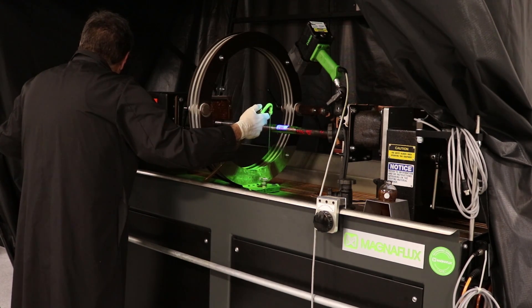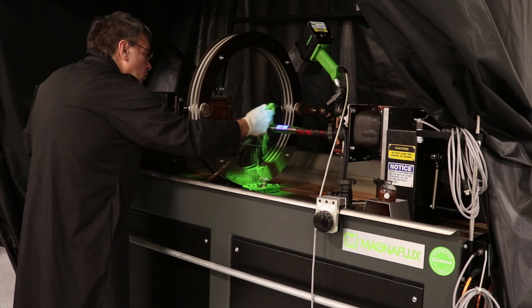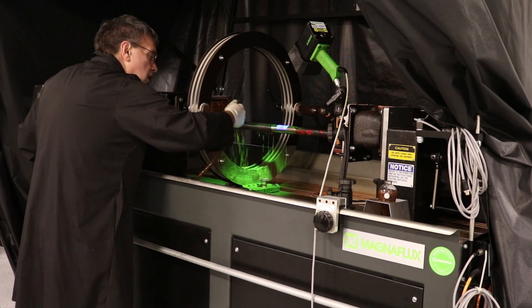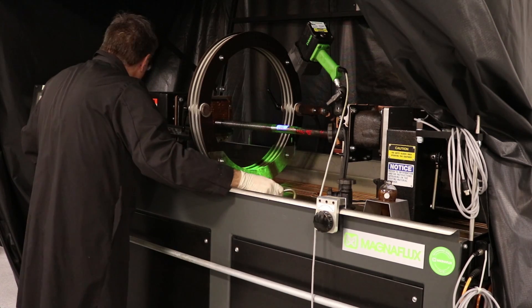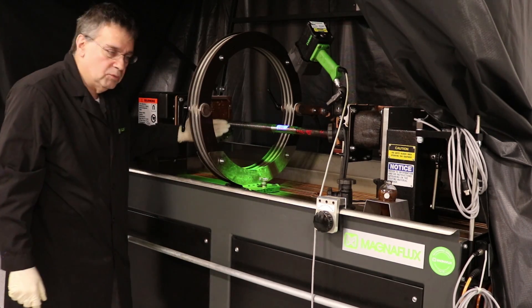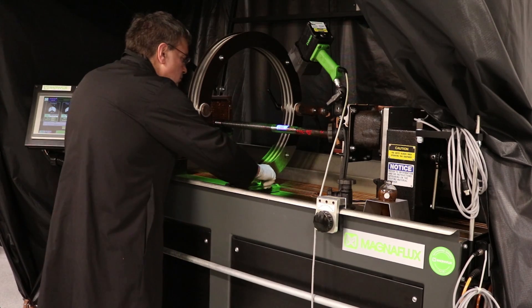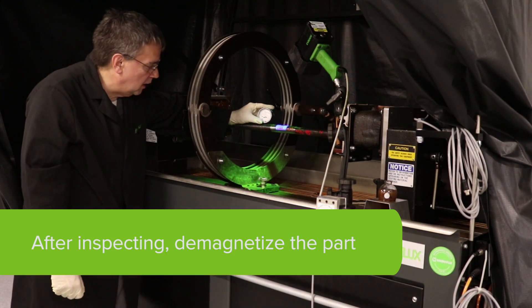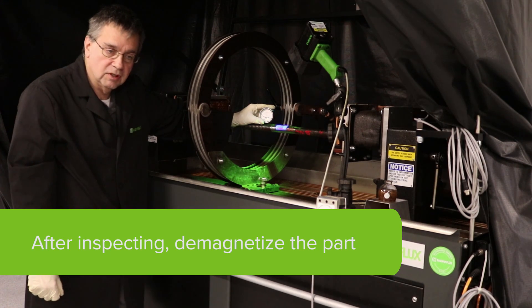Wave the part and apply the current just prior to stopping or as you stop the bath flow. And then you would inspect the part. You can see clearly that I have a field established in this part.